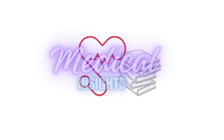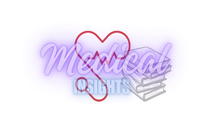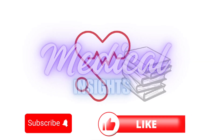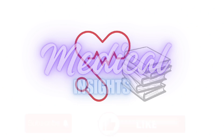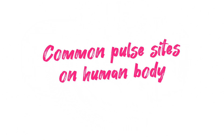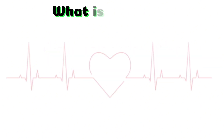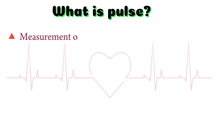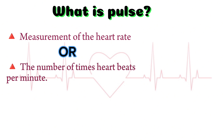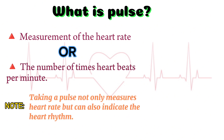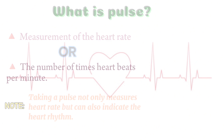Welcome back to my channel, Medical Insights. In today's video, we are talking about the common pulse sites on the human body. The pulse rate is a measurement of the heart rate, or the number of times the heart beats per minute. Taking a pulse not only measures the heart rate but can also indicate the heart rhythm.